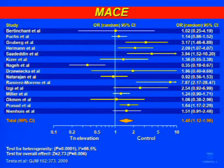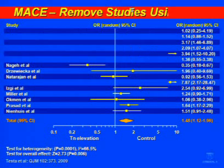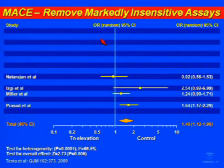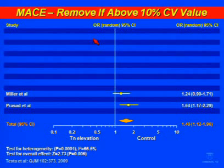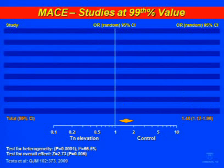Looking at a meta-analysis in the Quarterly Journal of Medicine suggesting that post-PCI elevations of biomarkers were prognostic and important, here is the MACE data. Let's first eliminate studies that equate troponin with CKMB using the so-called ROC value—a very high value, almost invariably a log higher than the 99th percentile. Then let's take out the markedly insensitive assays nobody would use anymore, remove made-up values above the 10% CV value, and take out the 10% CV value itself. So we have no studies.